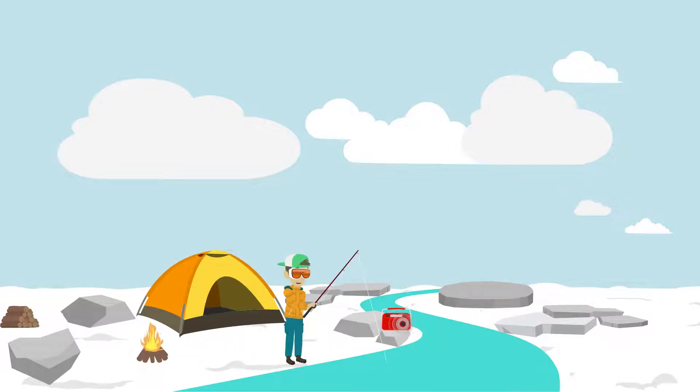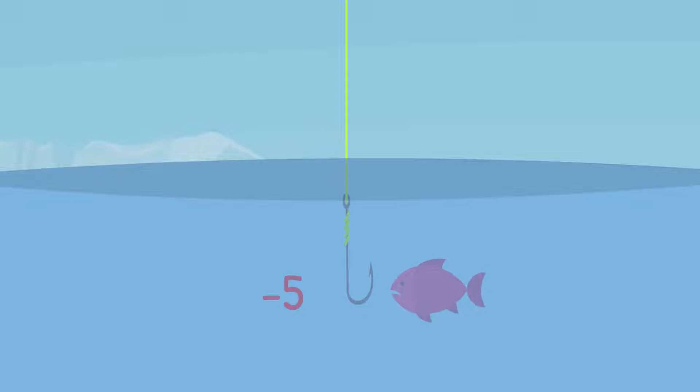How much fishing line should I let out? So if the fish is 5 feet below the water, and the end of the rod is 6 feet above the water. That's 6 minus negative 5.